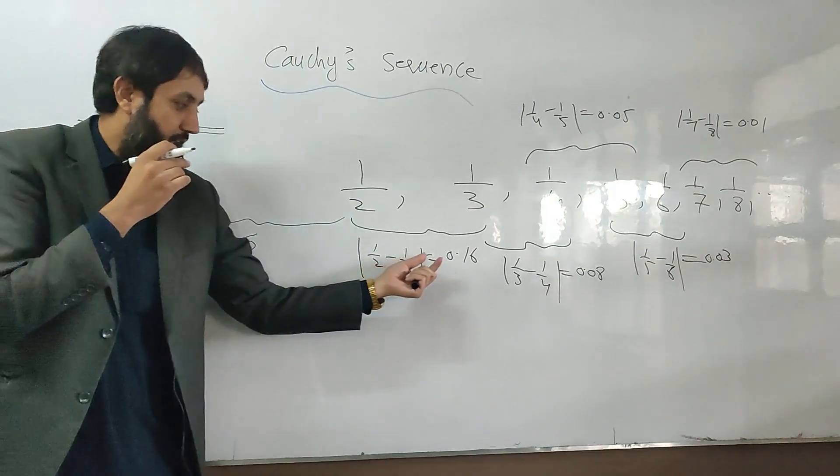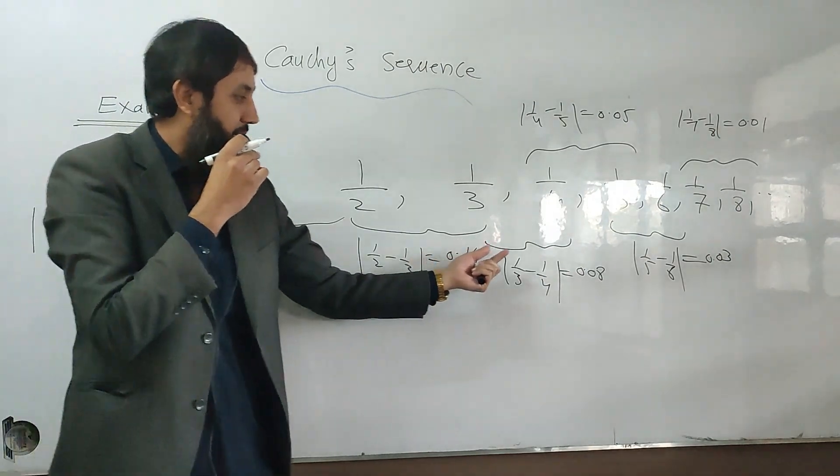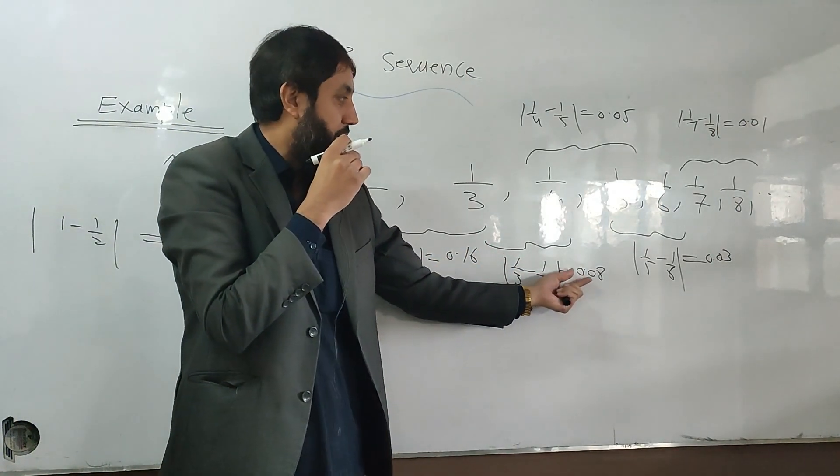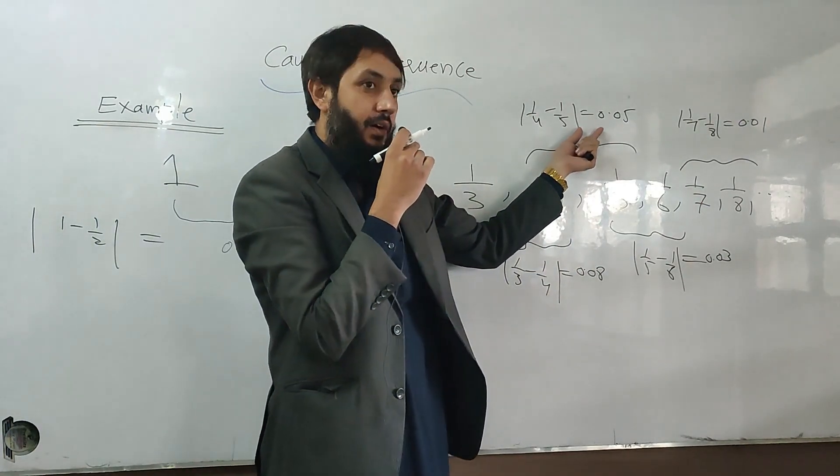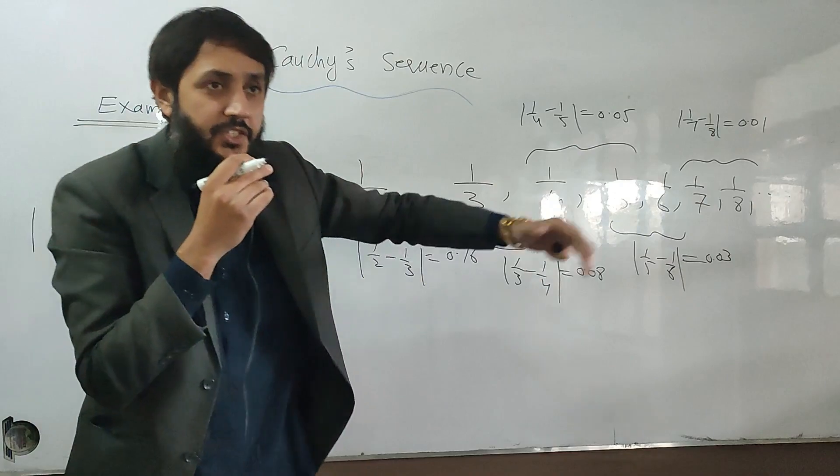What is the distance between second term and third term? 0.16, 0.008, 0.05, 0.03, 0.001 and reducing. The distance is reducing.